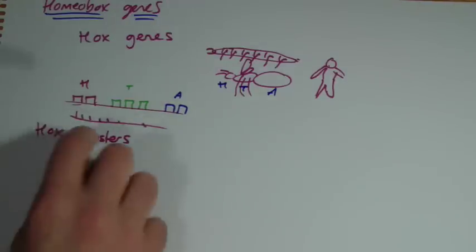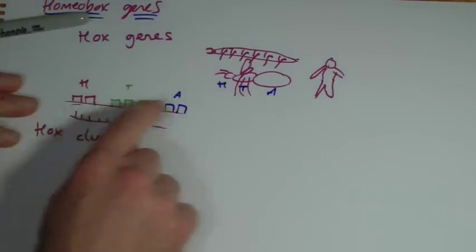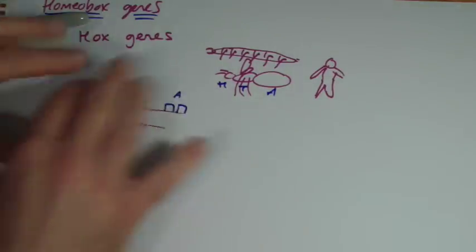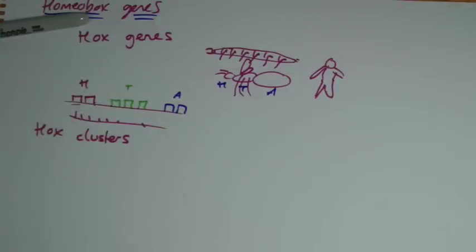And the way I've drawn it is roughly what's going on - they actually come in the order that they appear in the body. They're not all just mixed up like we maybe think that genes are sometimes.